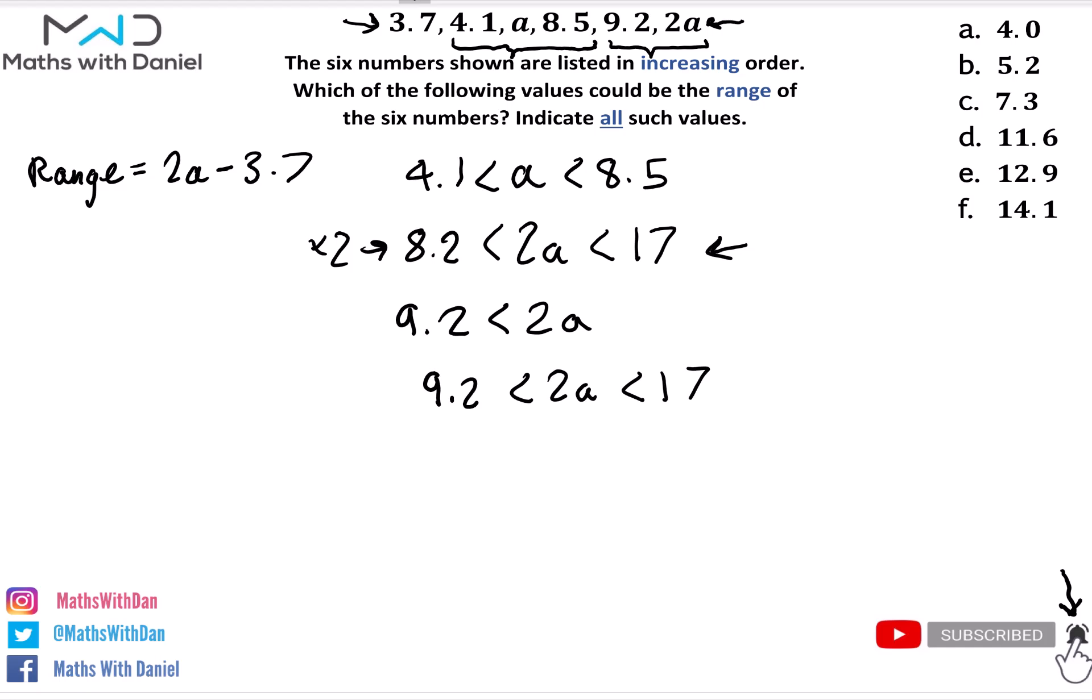Therefore we can see that 2a ranges between 9.2 and 17. And what do we know? The range is the biggest number, which is 2a, take away 3.7, the smallest number. So what we can do to answer our question is we can express this inequality in terms of the range. All we need to do is take away 3.7 from each part of the inequality. So we've got 9.2 take away 3.7, which is in between 2a take away 3.7, and this is in between 17 take away 3.7.